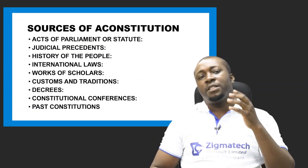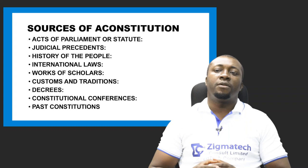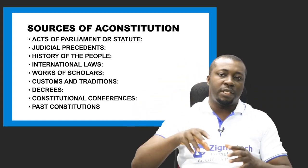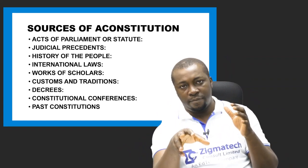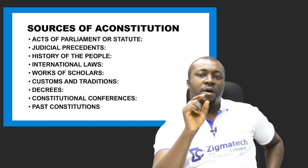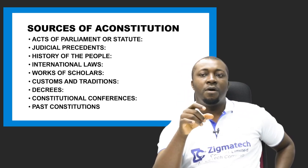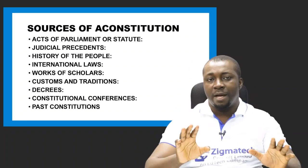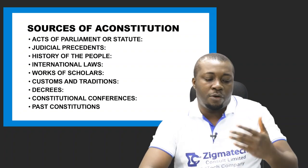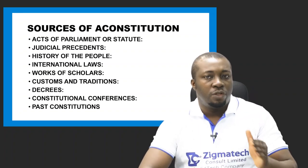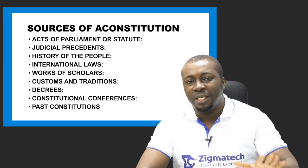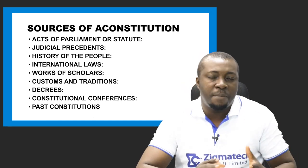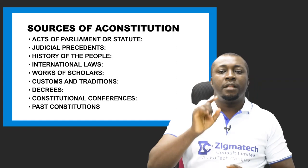Now let's look at the sources of the constitution — the areas from which the provisions of the constitution are drawn. Number one is Acts of Parliament or legislation. These are laws made by the legislature. When a constitution is being drafted, some laws made by the legislature are put into consideration and can be made part of the provisions of the constitution.